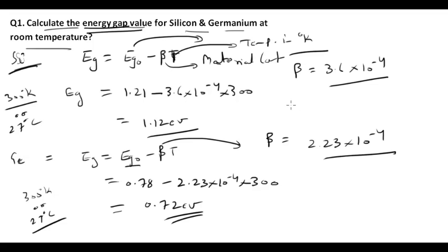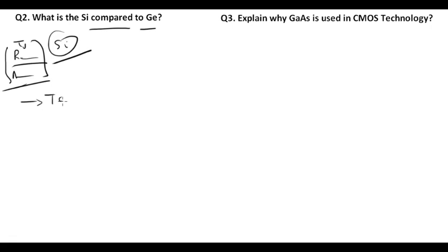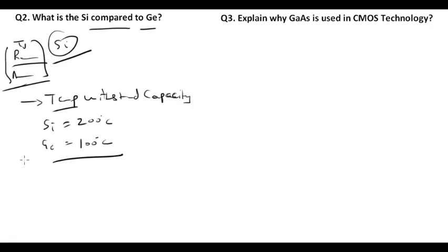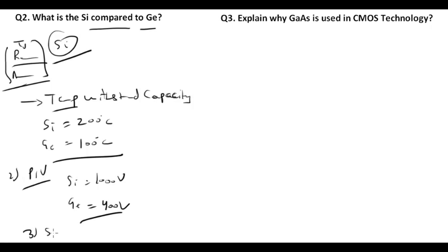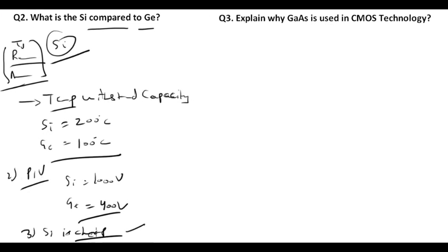Question number two: what is the importance of silicon compared to germanium? Silicon is used everywhere — in TVs, radios, amplifiers, etc. First, the temperature withstand capacity for silicon is 200°C, but for germanium it is only 100°C. Second, the peak inverse voltage (PIV) rating for silicon is around 1000 V, and for germanium it is around 400 V.